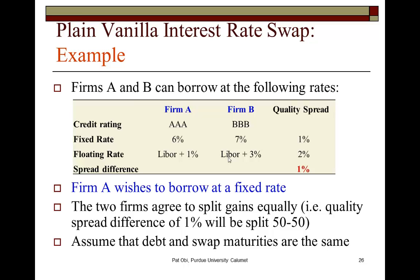In the floating rate market, where the quality spread is greater, we find that this spread of 2% gives a spread difference of 100 basis points. This one percentage point represents the amount by which the floating rate quality spread exceeds the fixed interest rate quality spread. This spread difference of 1% is actually the bounty that would have to be shared in some fashion by these two firms.